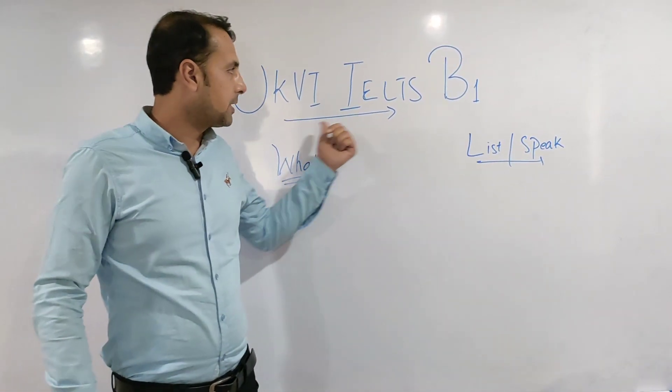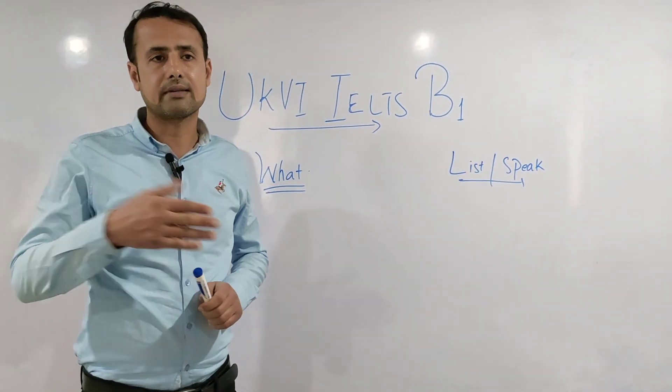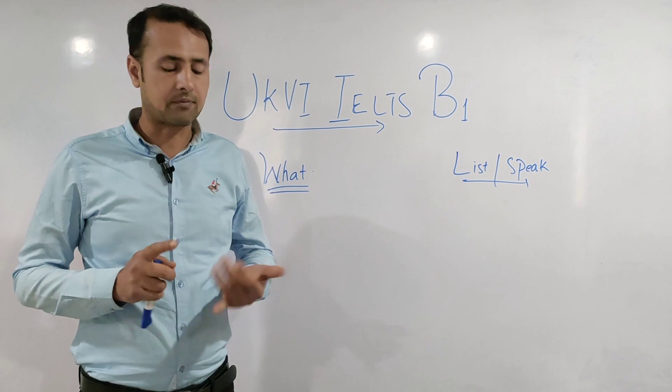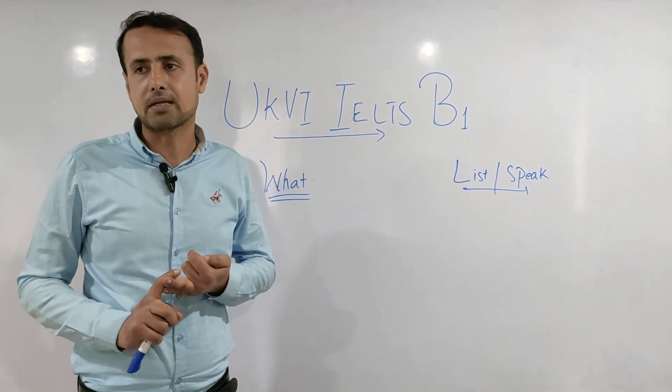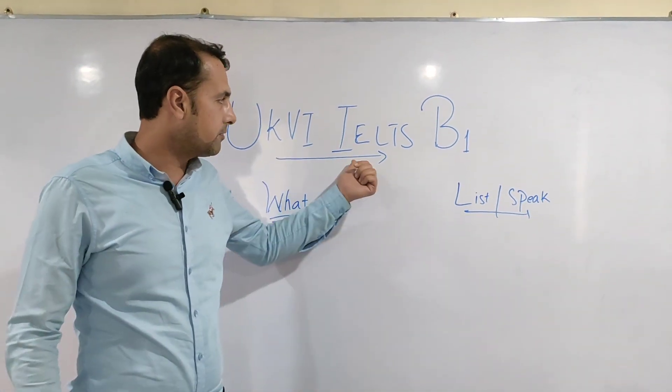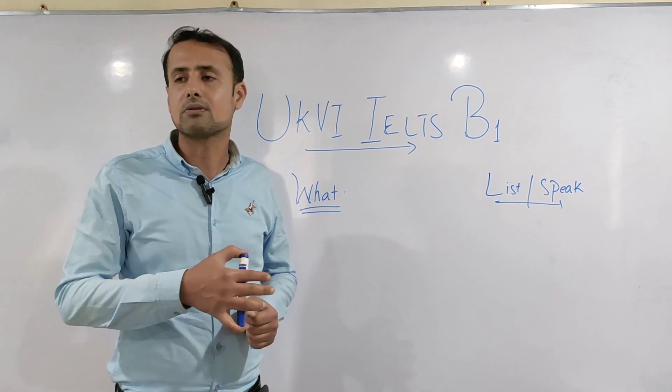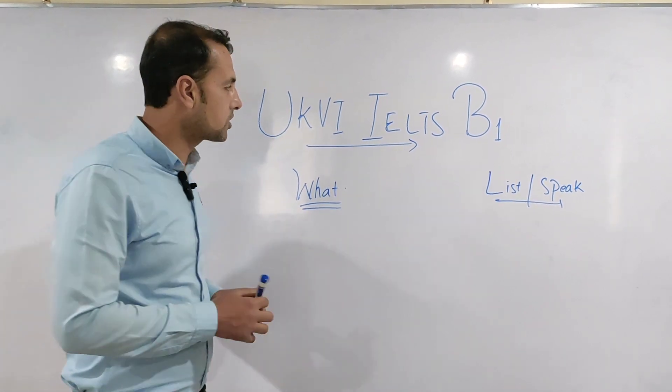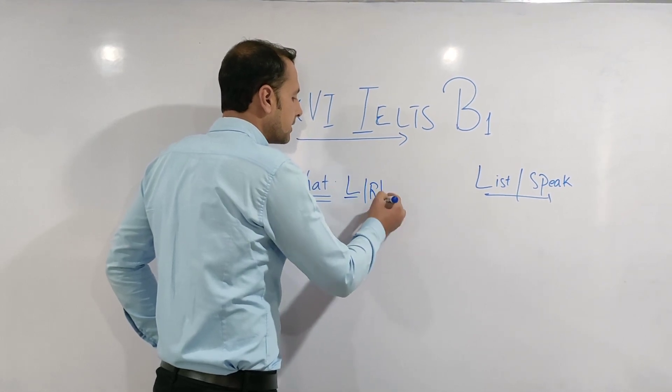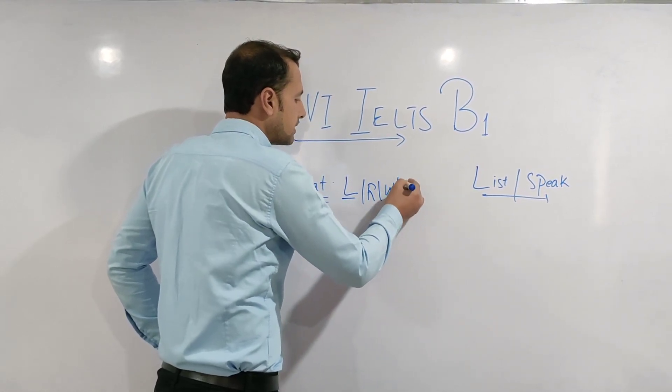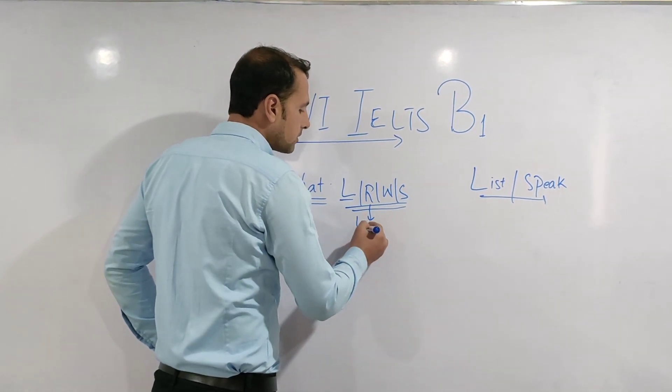Why do people call it a B1 test? In IELTS, there are nine bands total. For listening, you can score up to nine. Same is the case with reading, writing, and speaking. So for UK IELTS B1, what is a candidate supposed to have? In each component - listening, reading, writing, and speaking - they need to score four.